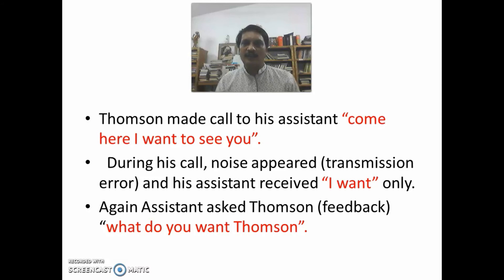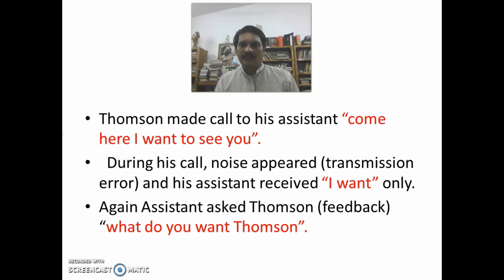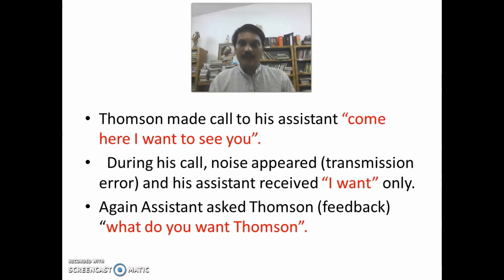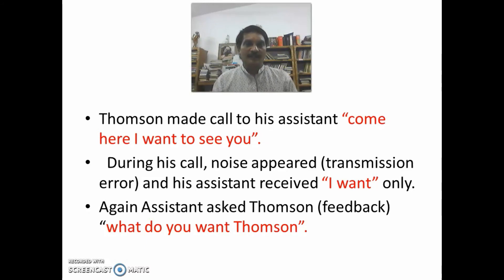Thompson made a call to his assistant saying, 'Come here, I want to see you.' During the call, noise appeared and there was a transmission error. His assistant received the message as, 'I want Molly.' The assistant then asked Thompson for clarification — that is, feedback: 'What do you want, Thompson?'